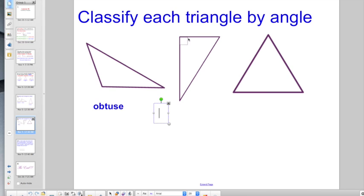This one up here is really easy because it has the little symbol telling you that's 90 degrees. So if it's 90 degrees, that is a right triangle.